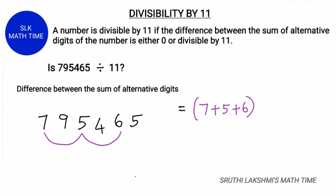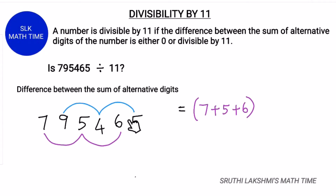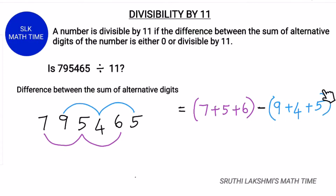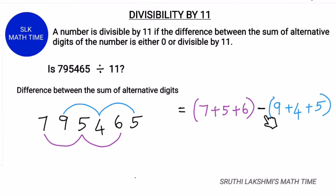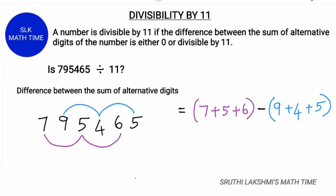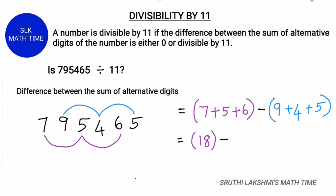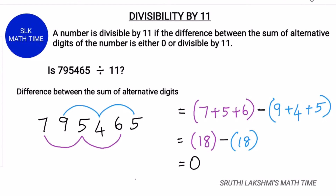The other set of alternative digits is 9, 4, and 5. So we have to add them together too. Next we subtract these two sets of alternative digits. So, 7 plus 5 plus 6 is 18, and 9 plus 4 plus 5 is also 18. So, 18 minus 18 is 0.